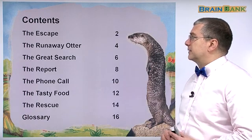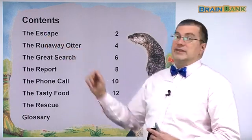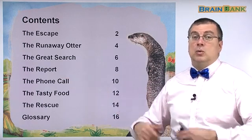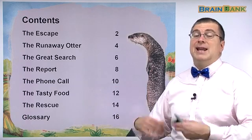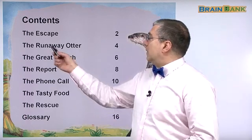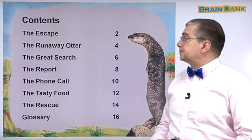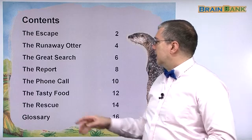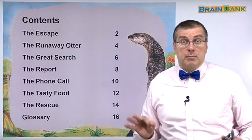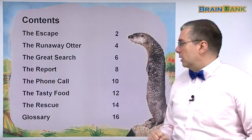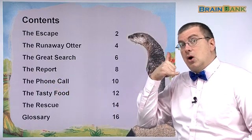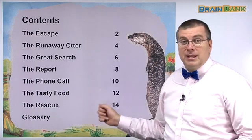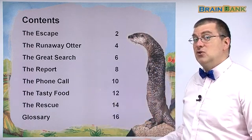So let's take a look at the contents. Here we have the escape. The escape means to get out of some place, to run away, to be successful in running away — you escape. Then we have the runaway otter. Next, the great search — so people look for the otter. The report — there's a report filed about the otter. Then the phone call — somebody calls about the otter. The tasty food — the otter finds some tasty food.